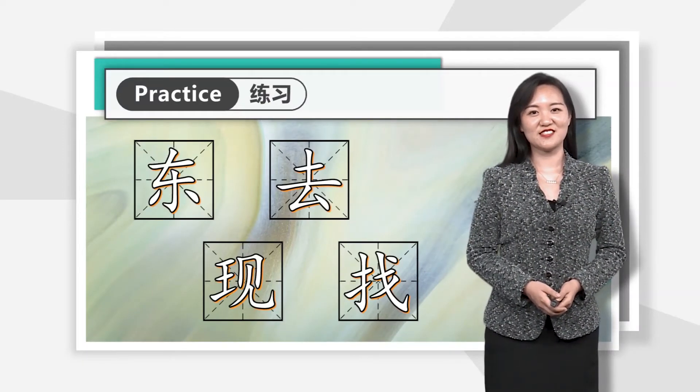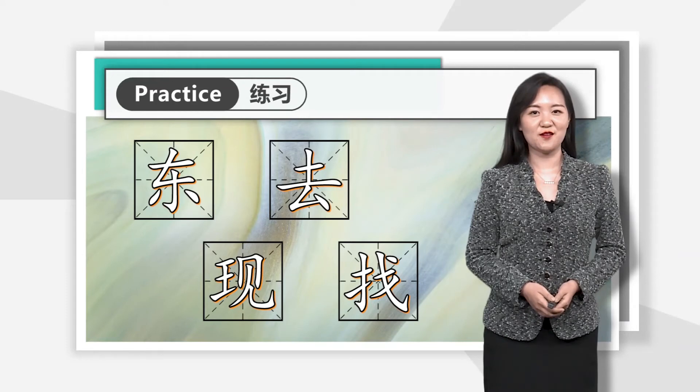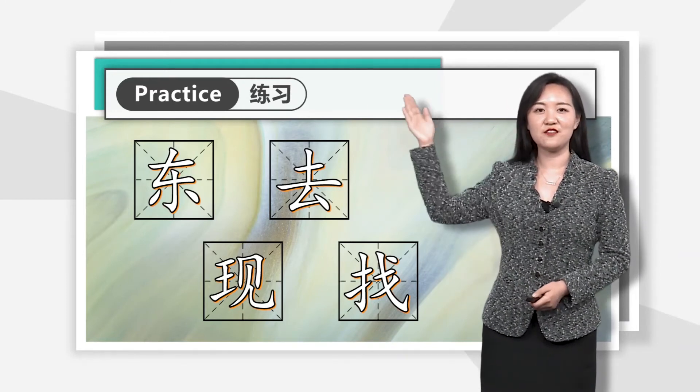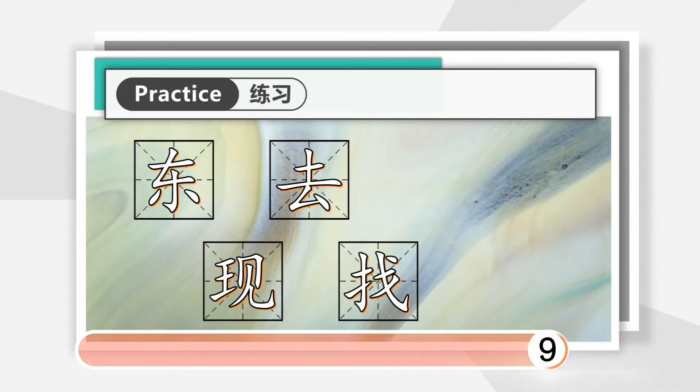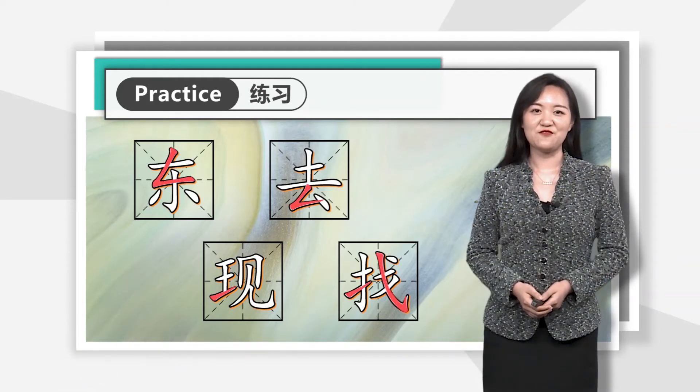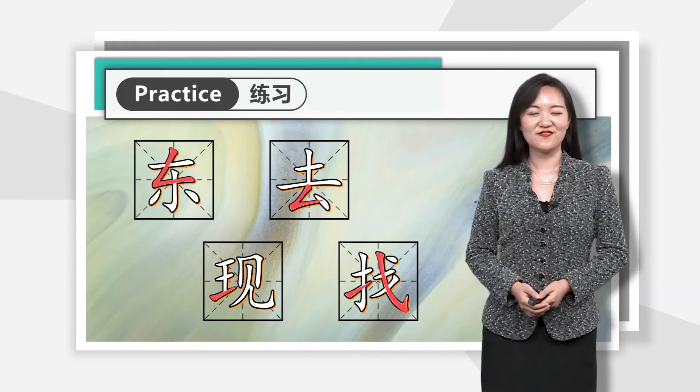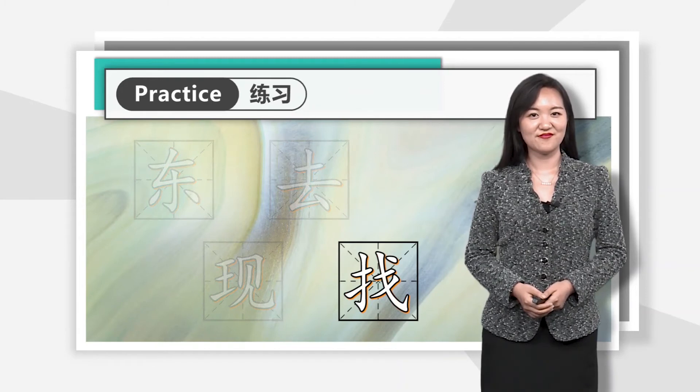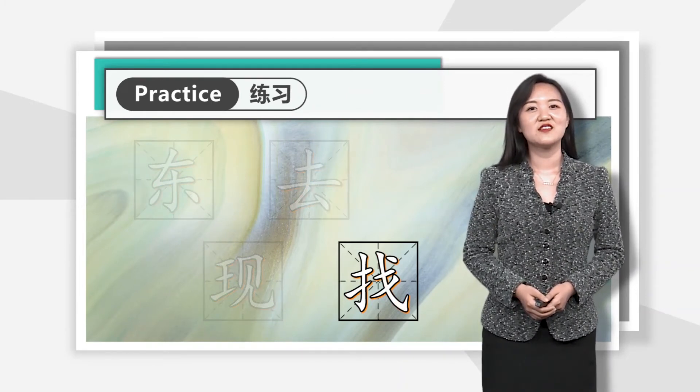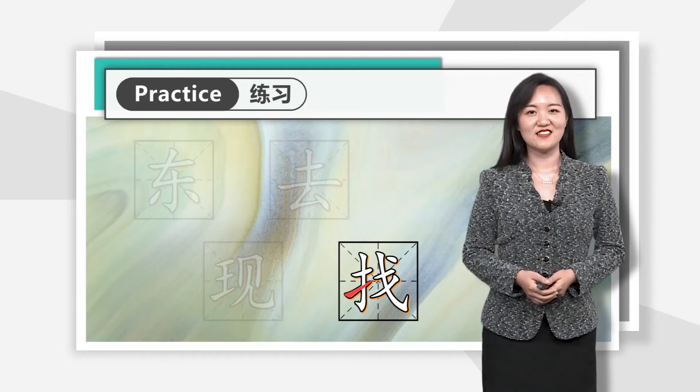Now let's do some practice. Please find the new strokes we have just learnt in the following four characters. Have you found all of them? Very good. How many new strokes have you found in 找? Bingo! Two: 提 and 斜钩.